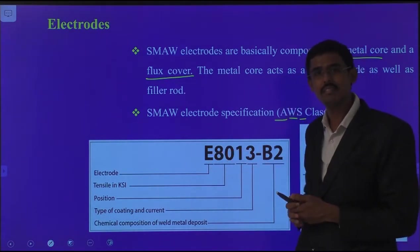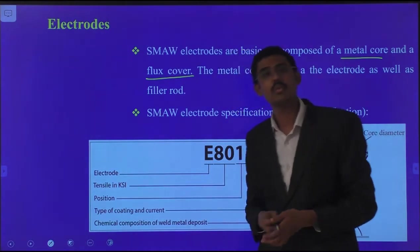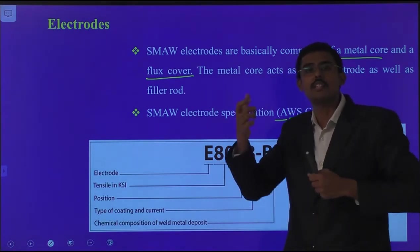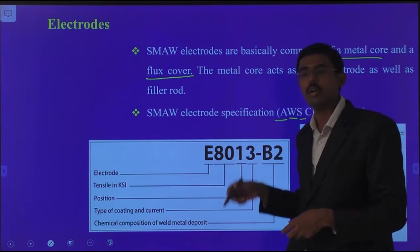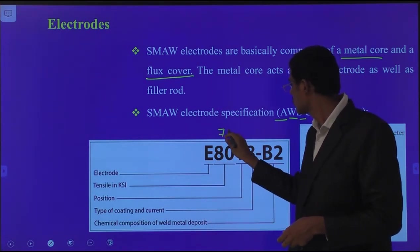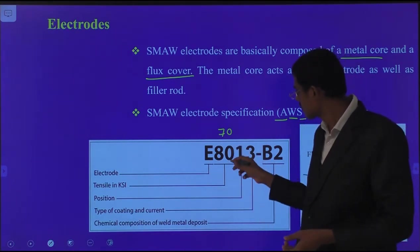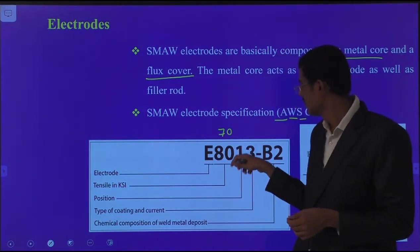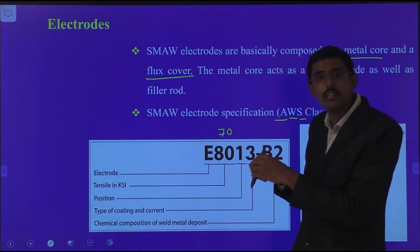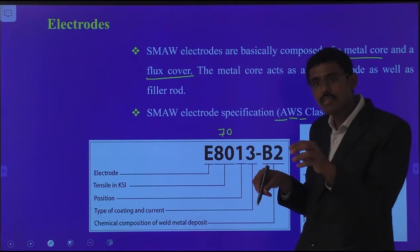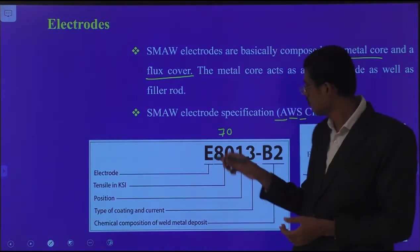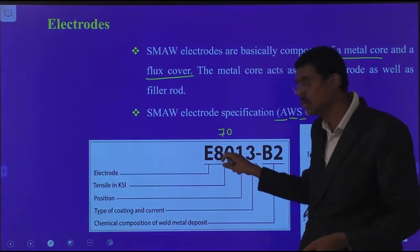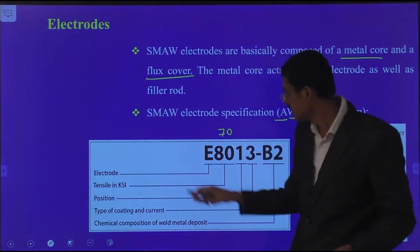In the classification E8013-B2: 'E' belongs to electrode. The next two digits '80' represent tensile strength measured in ksi. The digit '1' belongs to welding positions — all positions (1G, 2G, 3G, all positions). The digit '3' belongs to the type of coating available. Then 'B2' represents the chemical composition of the weld metal. For example, if a manufacturer wants 80 ksi tensile strength, they purchase E8013-B2 electrode. If 70 ksi tensile strength is needed, they purchase E7013 electrode.